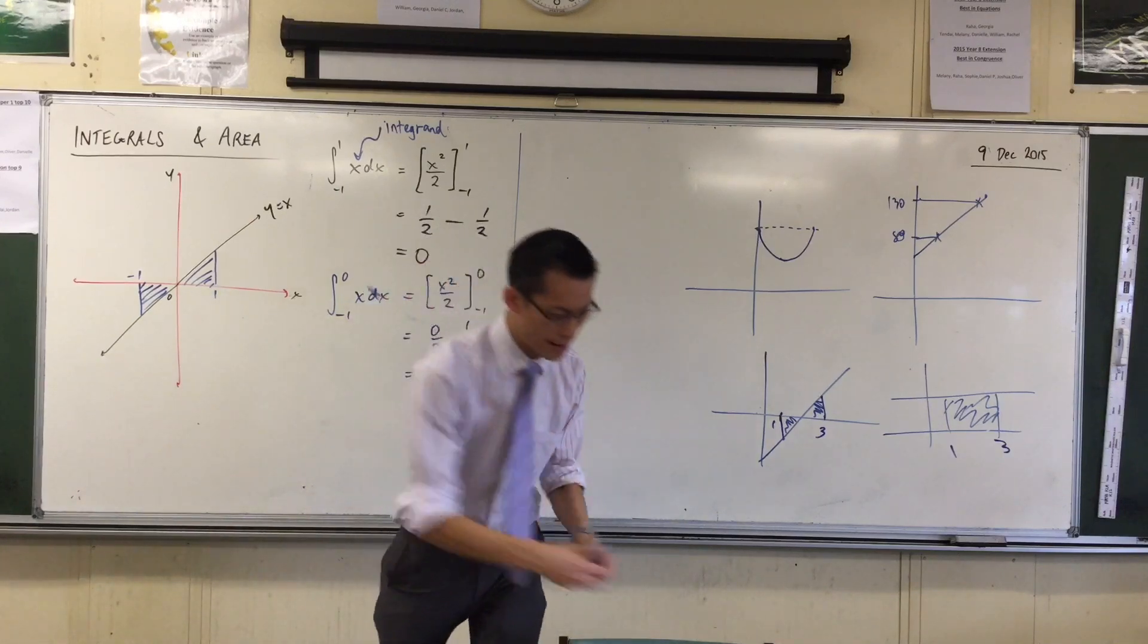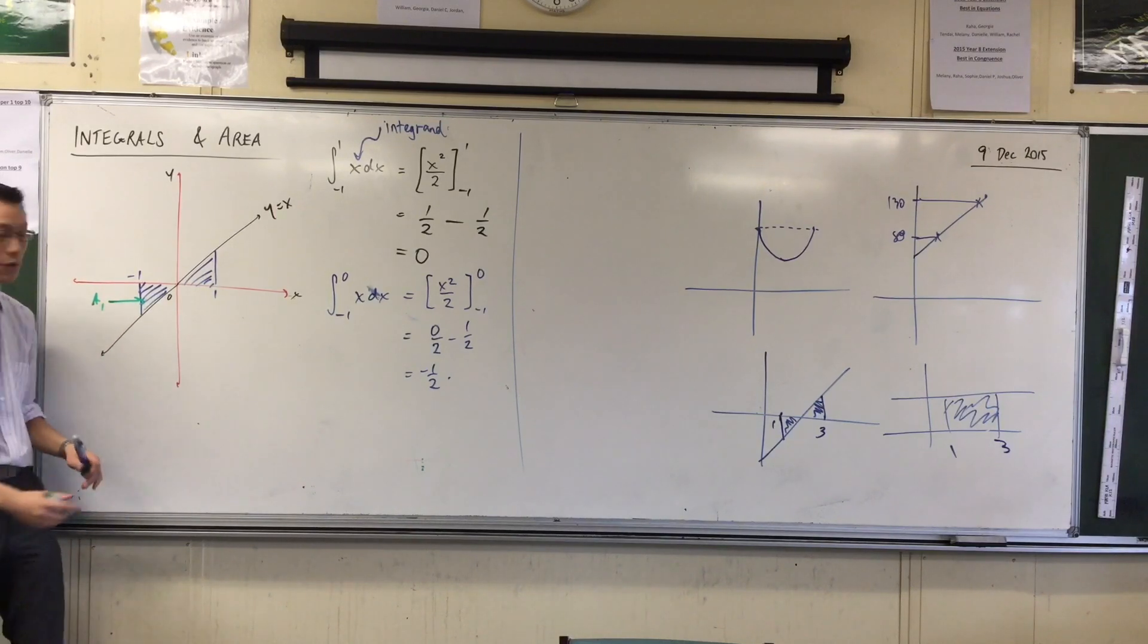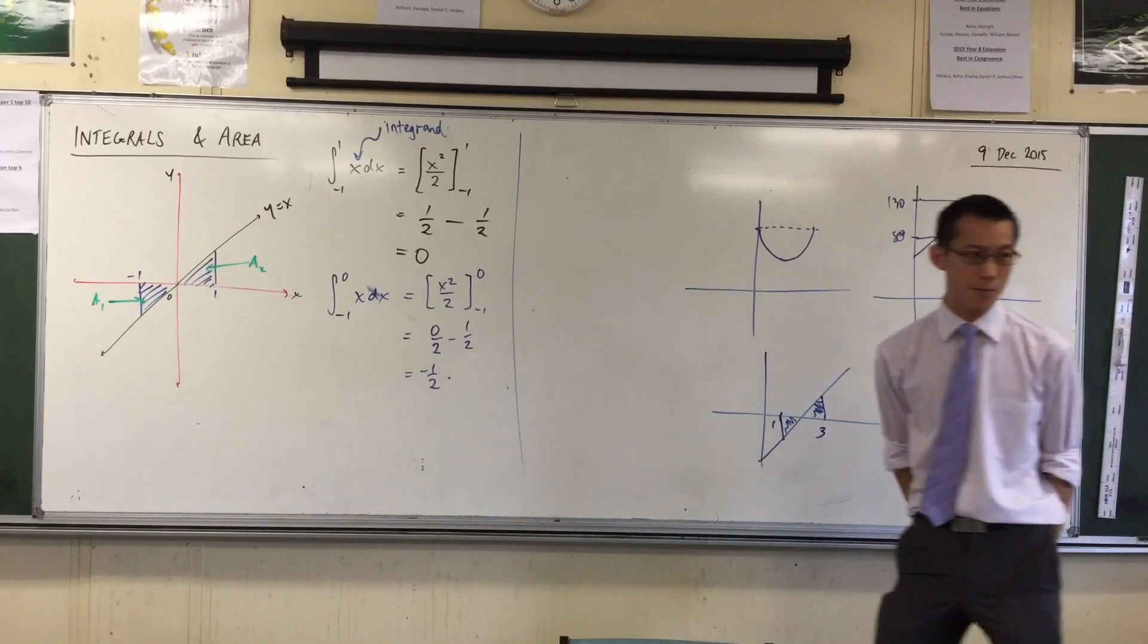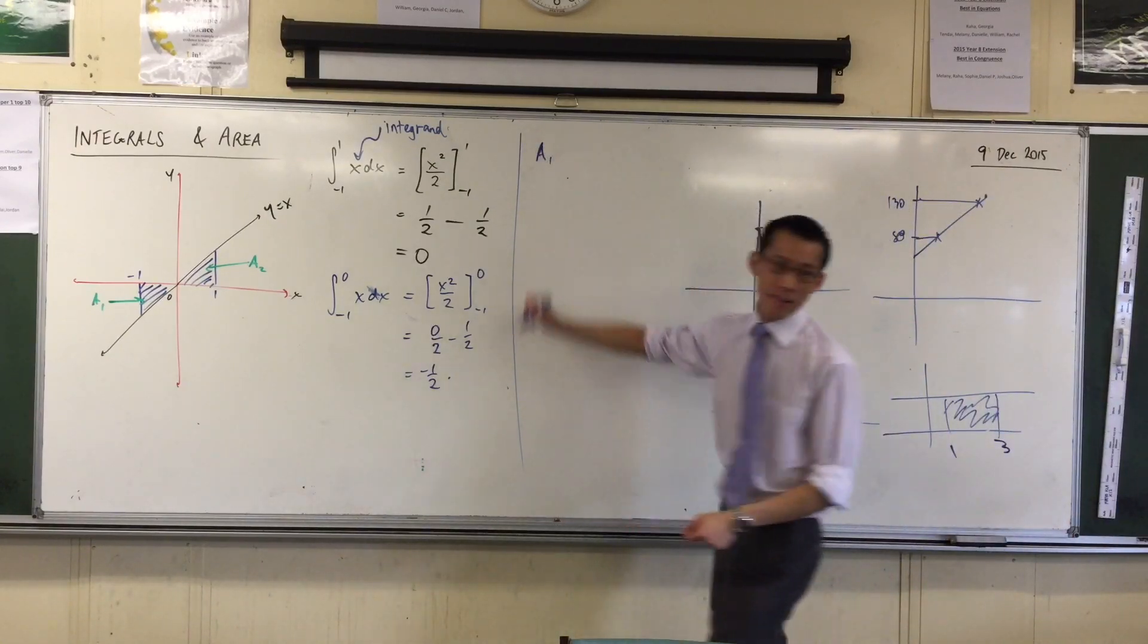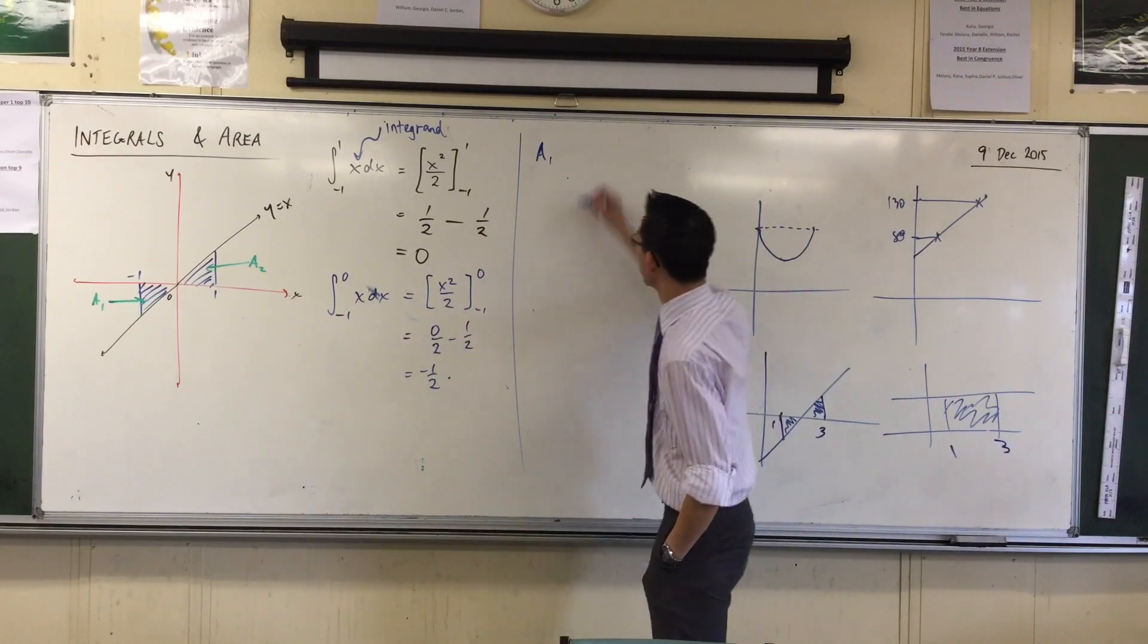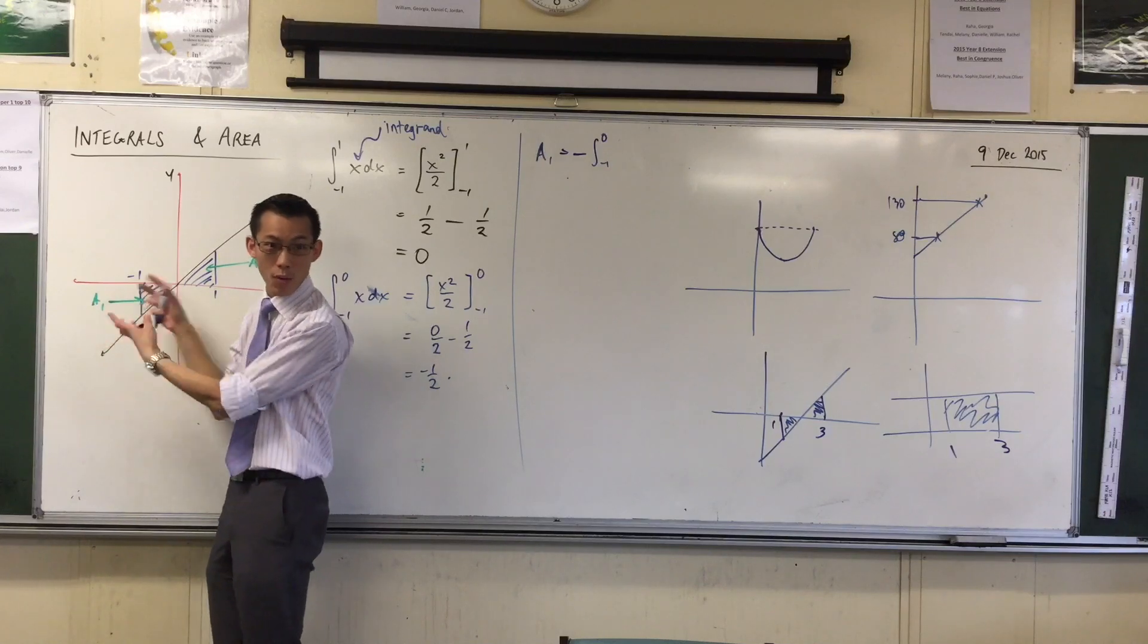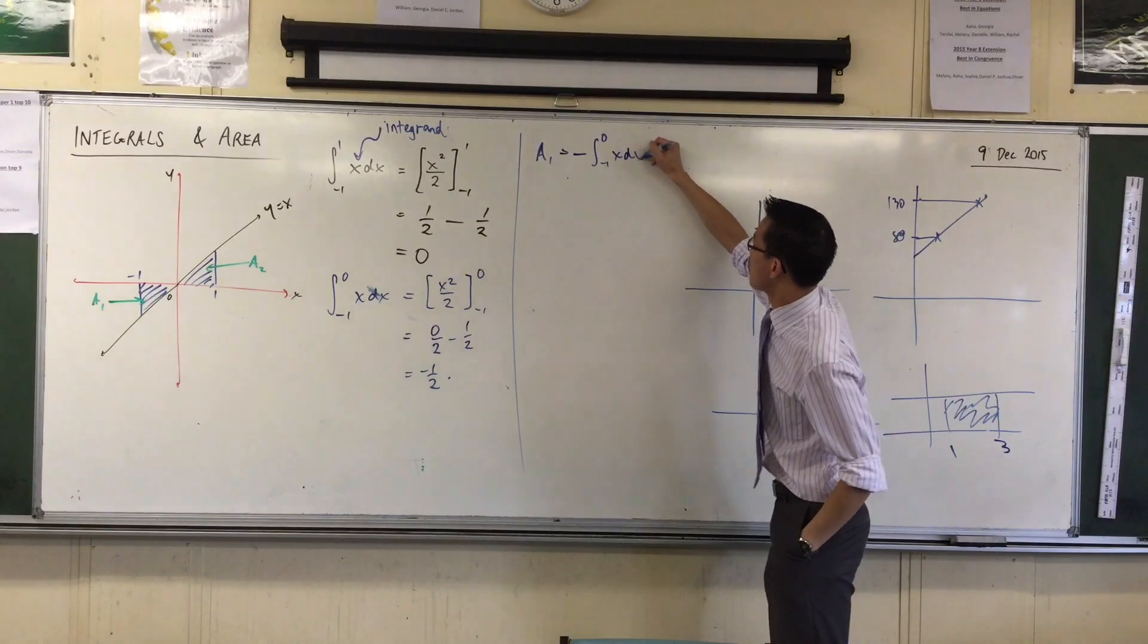this area over here being beneath the axis, I'll label it, and you might like to label it as well. I'm going to call this area one. Name that area one. Good morning. And I'll call this one area two. I'm giving them different names because I'm treating them separately. One's negative and one's positive, so I have to deal with them in different ways. I would say area one is not the integral from negative one to zero. In fact, it is negative, the integral from negative one to zero,